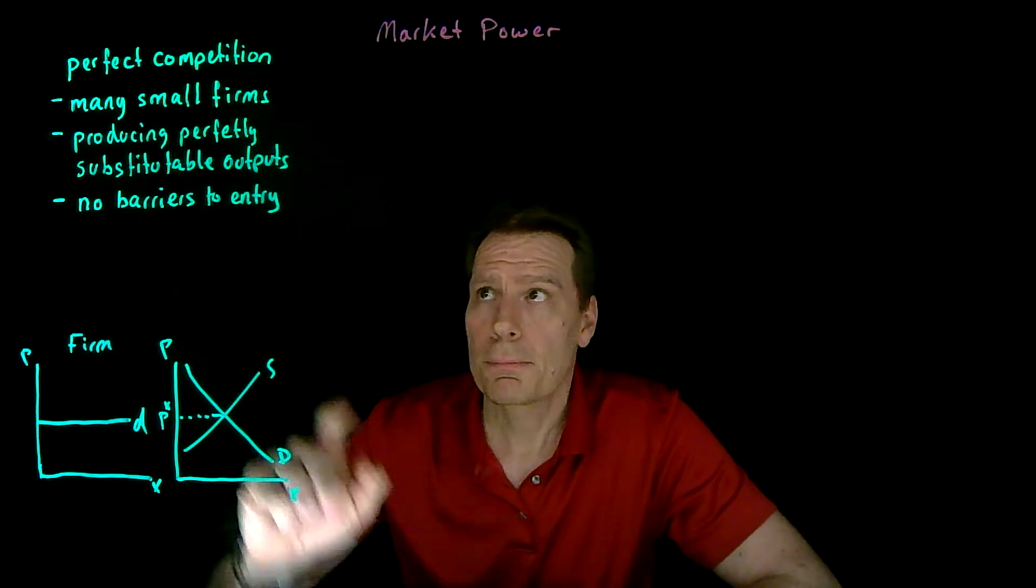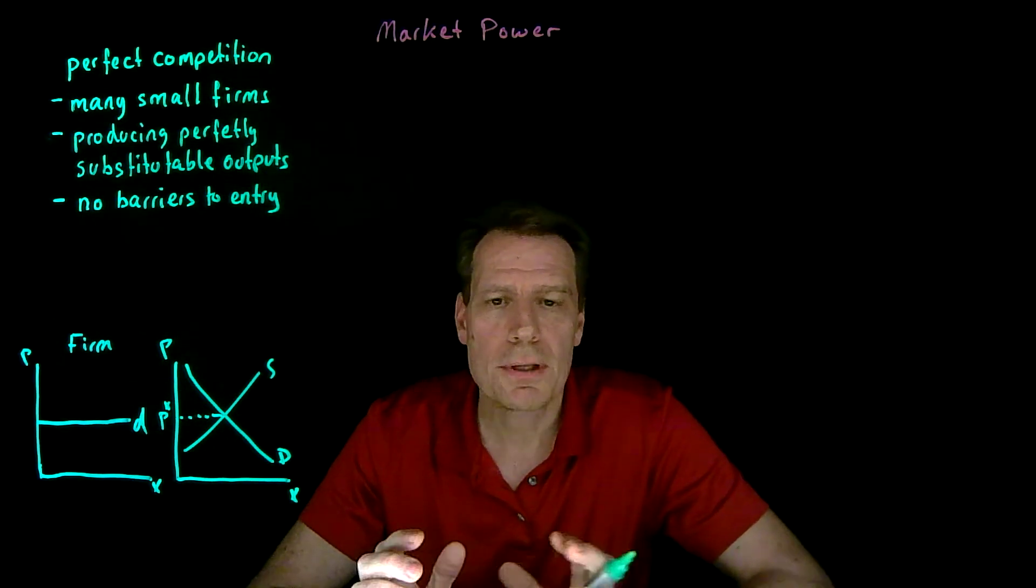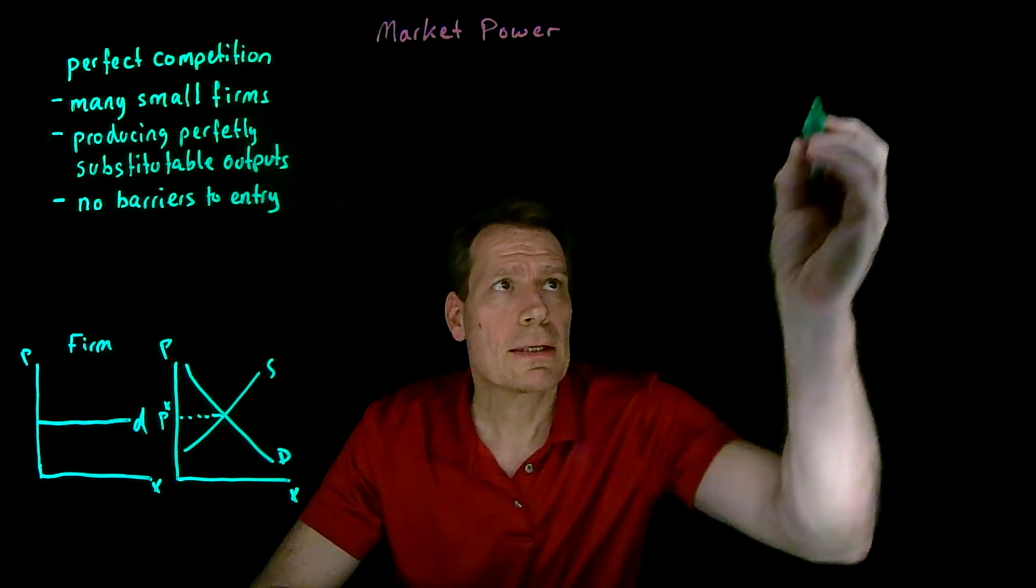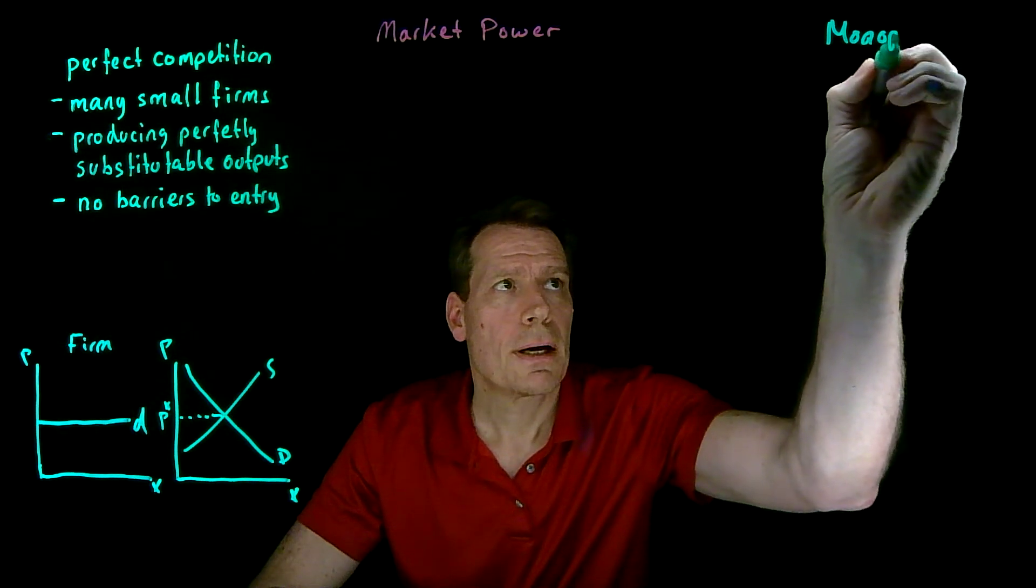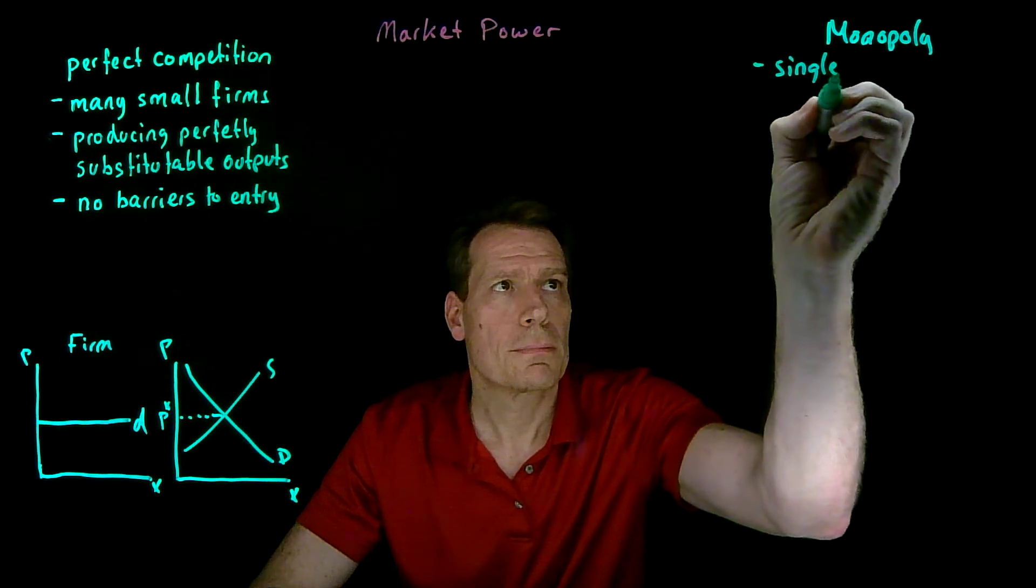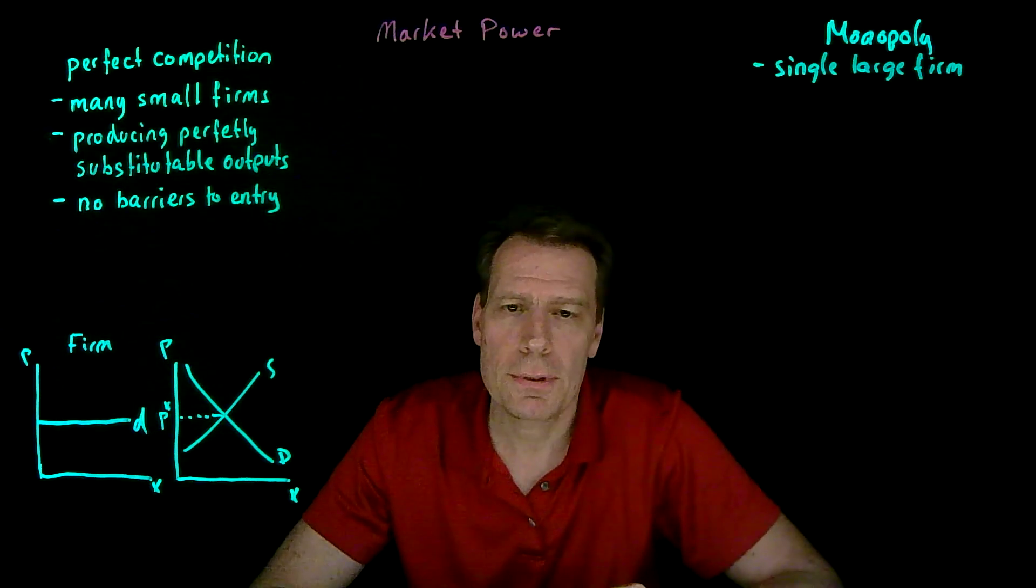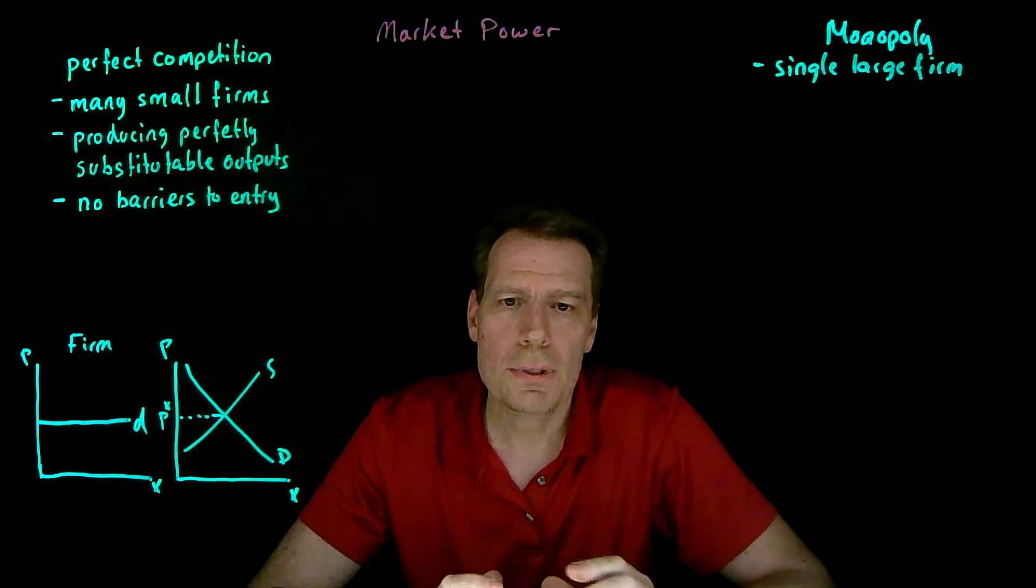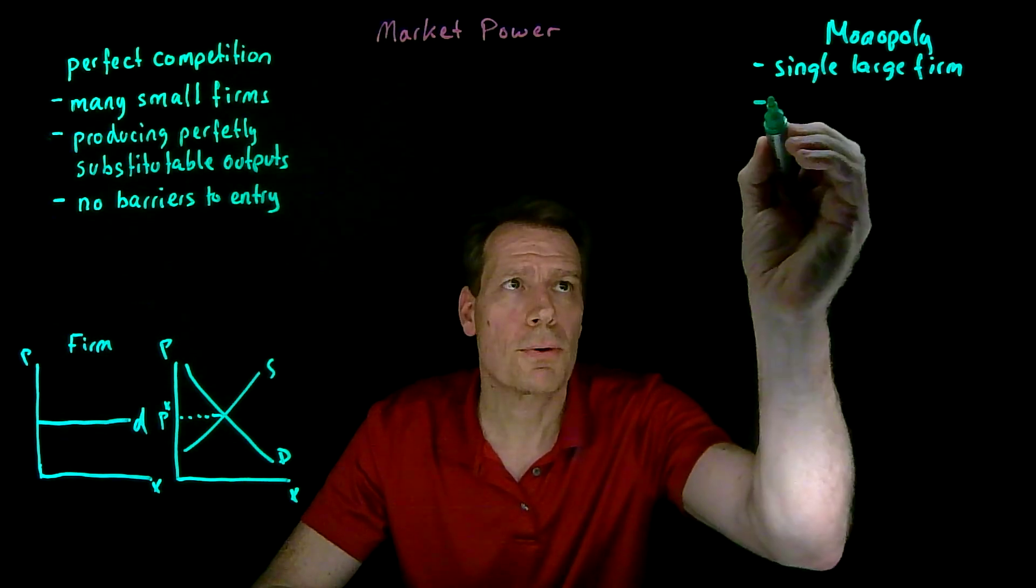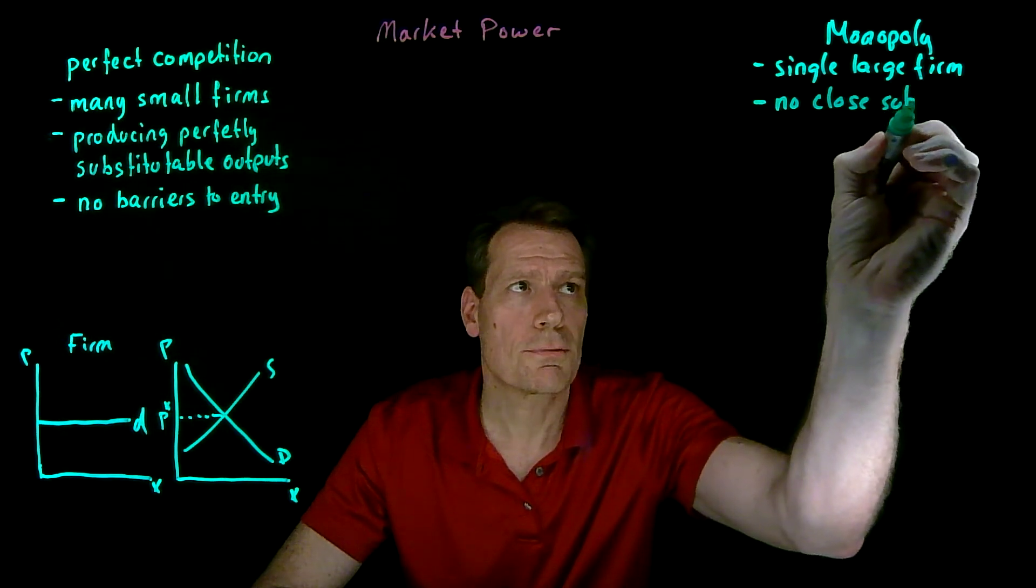This market structure, perfect competition, is at one end of the spectrum of different market structures. On the other end is the case of a monopoly. A monopoly is a single large firm producing an output that has no close substitutes, so no one else is producing something close to it, which means consumers have no other place to go.